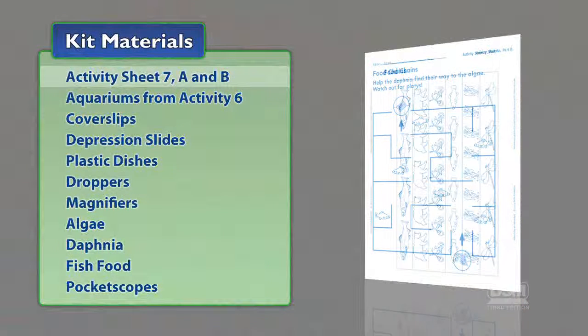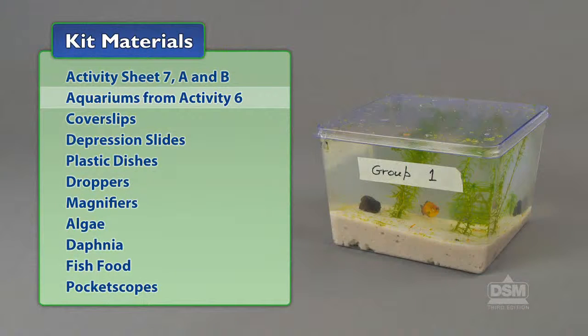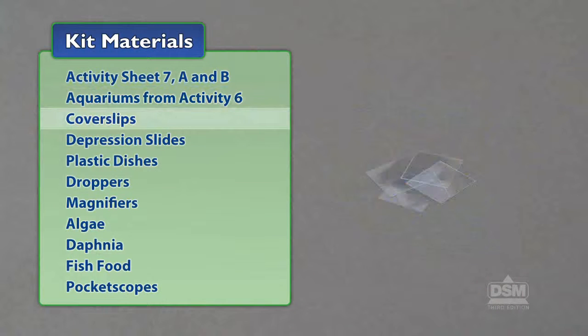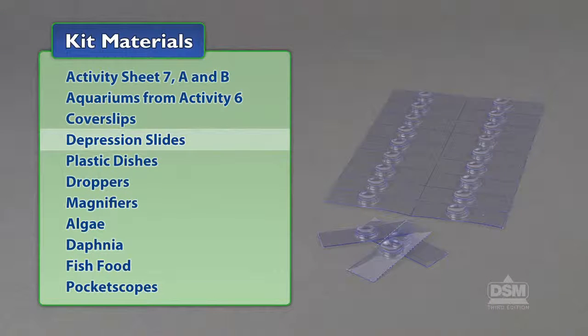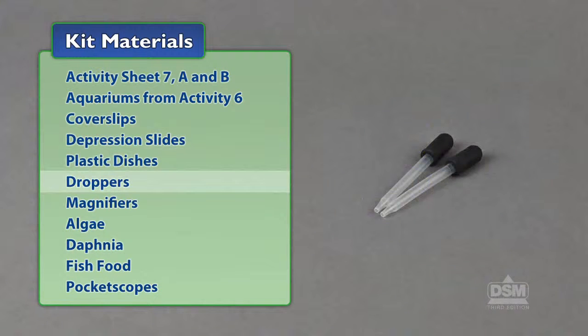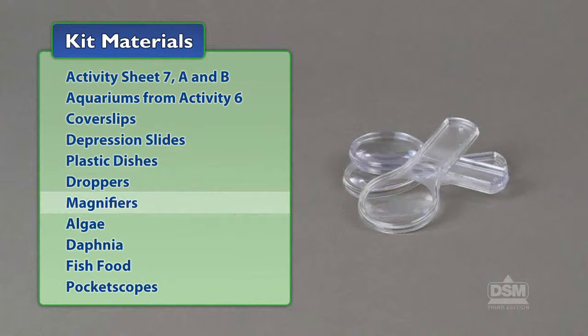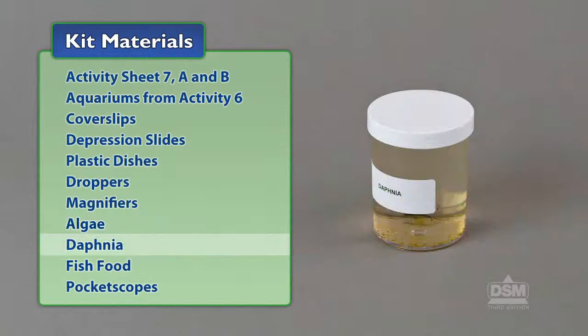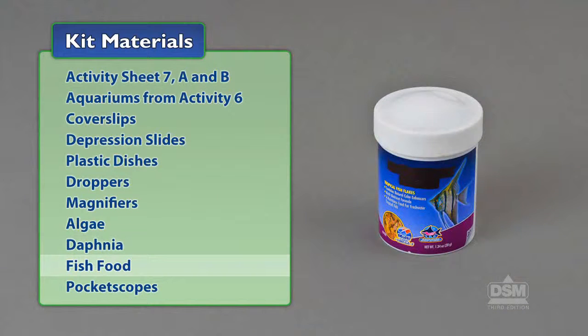You will need the following materials from the kit: Activity sheet seven, parts A and B, aquariums from activity six, cover slips, depression slides, plastic dishes, droppers, magnifiers, algae, daphnia, fish food, and pocket scopes.